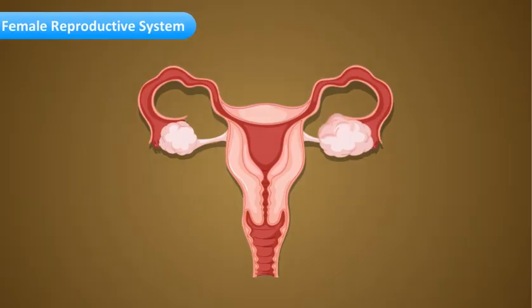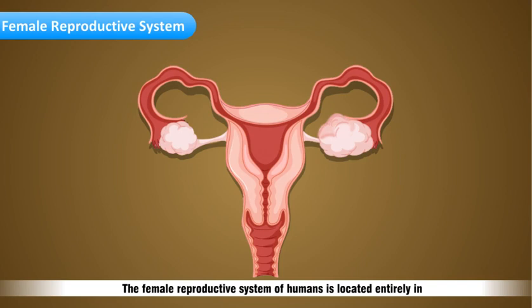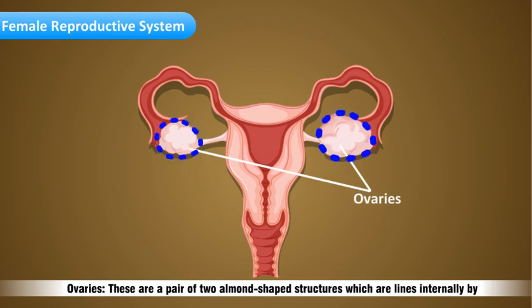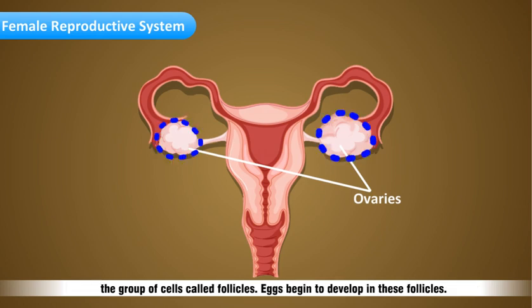The female reproductive system of humans is located entirely in the lowest part of the abdomen. It consists of the following reproductive organs. Ovaries: these are a pair of two almond-shaped structures which are lined internally by a group of cells called follicles. Eggs begin to develop in these follicles.